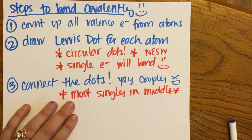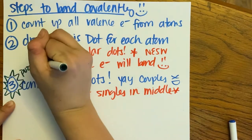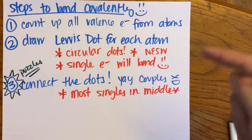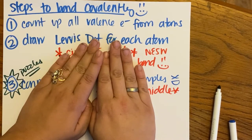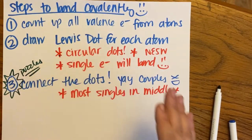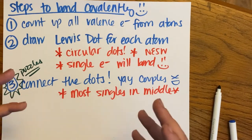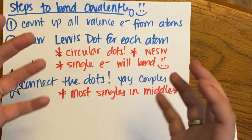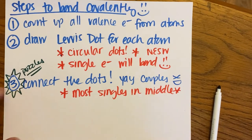Some of these can get tricky — some covalently bonded molecules can be hard to bond. These are puzzles. Don't get frustrated if you can't figure out exactly where each single is going to bond. It is a puzzle. Sometimes when you're putting a puzzle together, you think pieces fit and then realize they don't. There are a lot of ways to start connecting larger molecules, so just remember it's a puzzle and this part is fun.